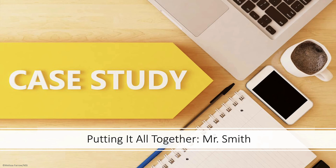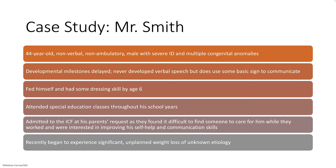Now we're going to use a case study with a pretty complex patient that we're going to call Mr. Smith, and we're going to use this case study to illustrate the dysphagia management process that we have been discussing thus far. Mr. Smith is a 47-year-old, non-verbal, non-ambulatory male with severe intellectual disability and multiple congenital abnormalities. His developmental milestones were reported as delayed, but he was able to learn to feed himself and learn some of his ADLs — activities of daily living — such as dressing himself, putting on his shirt and pants.